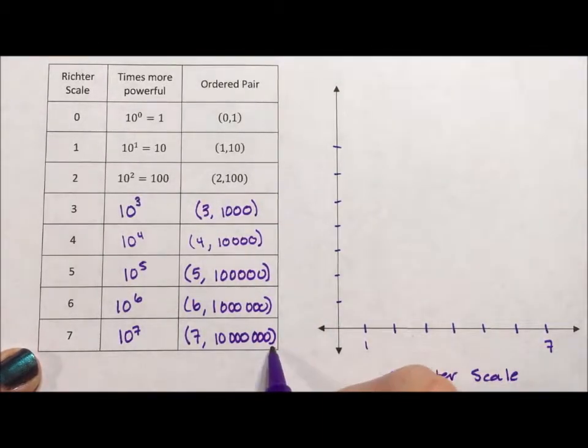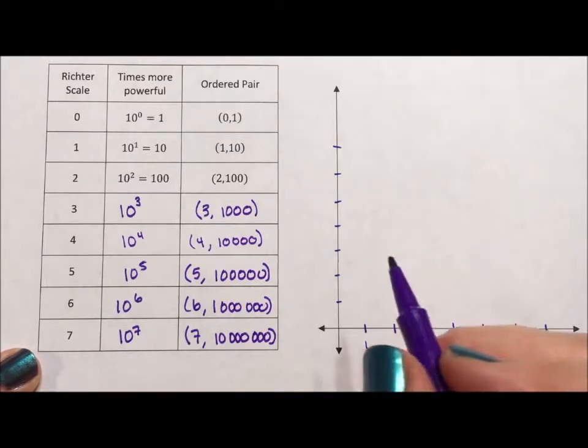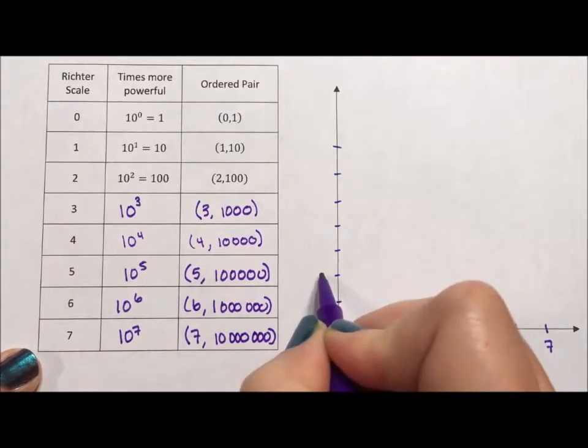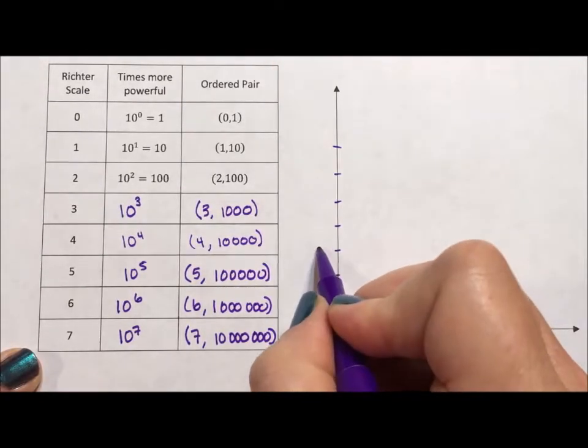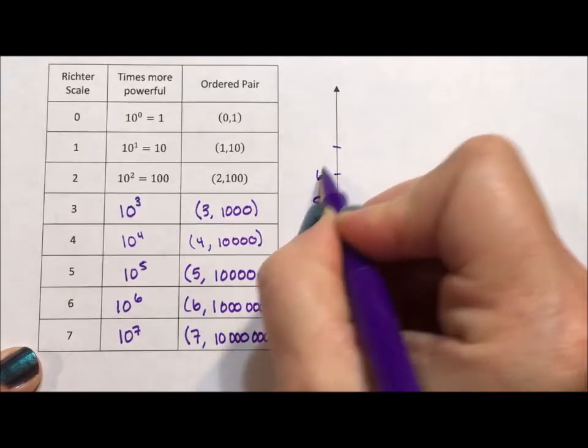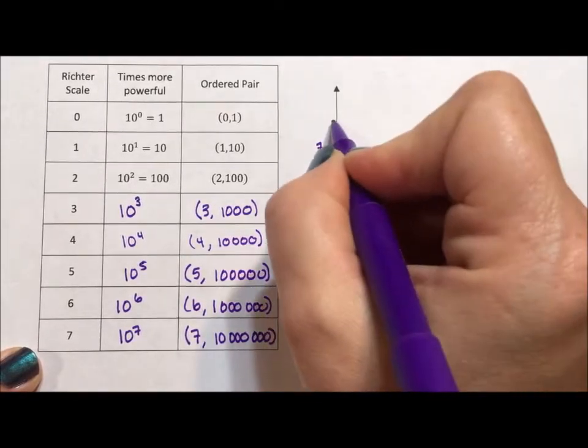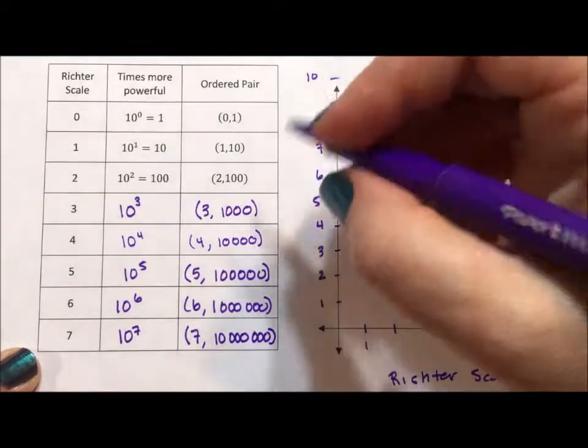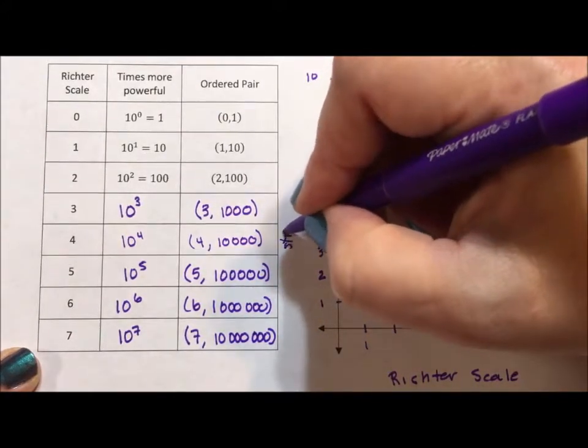Well, if I need to get to 10 million, then wouldn't it make sense if this was 1 million and this is 2 million and this is 3 million and 4 million and 5 million and 6 million and 7 million and 8, 9, 10 million.